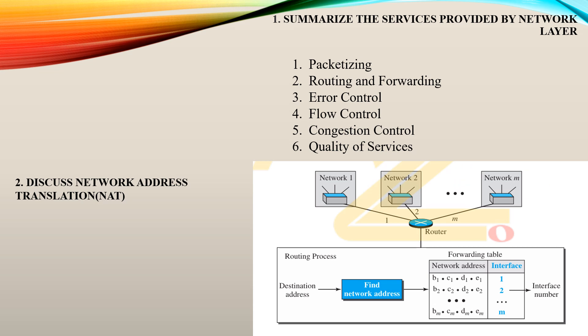First question: summarize the services provided by the network layer. There are six services provided by the network layer, with two being the most important. Packetizing is the first — the network layer is responsible for packaging the data, encrypting it, and routing it. It packetizes data with header and trailer so that no error occurs.